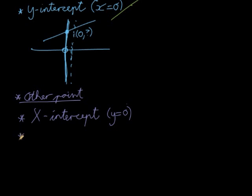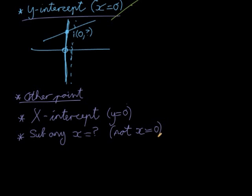Another way we can do it, is we just substitute any x equal to something, but not x equal to 0, because we've already substituted x equal to 0 for our first point. So we can just choose any other point, substitute it in for x, and find a value for y. Then we'll have another coordinate.